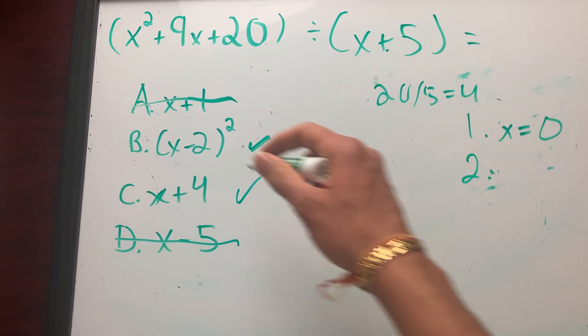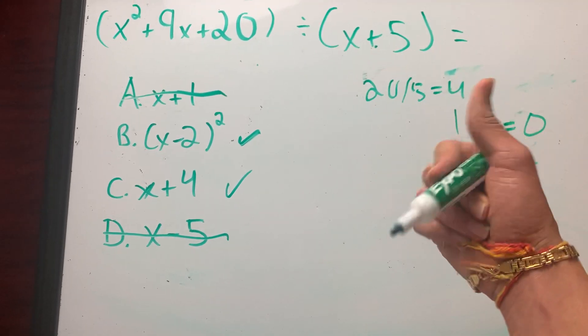So now let's plug in x equals one since there's two choices left. Sometimes there's only one choice left. You have your answer and you're done.